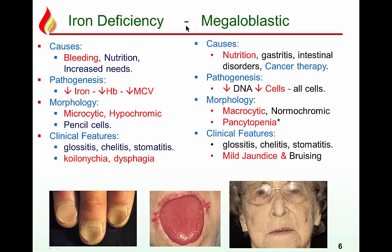The pathogenesis: both vitamin B12 and folate are necessary for DNA synthesis. Deficiency leads to decreased DNA and decreased cell division, resulting in fewer but larger cells. Because it affects all cell lines in the bone marrow, megaloblastic anemia typically presents with anemia, leukopenia, and thrombocytopenia — pancytopenia — whereas iron deficiency causes only anemia. Morphology: macrocytic normochromic anemia with pancytopenia.